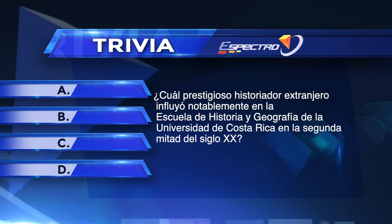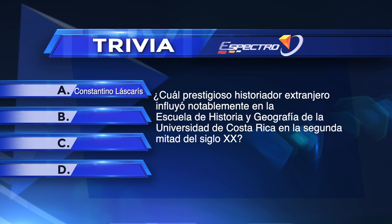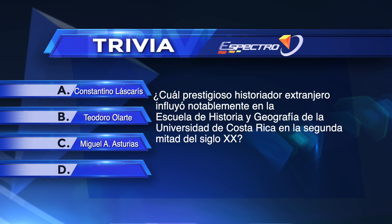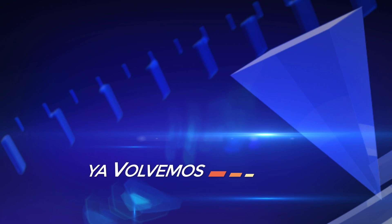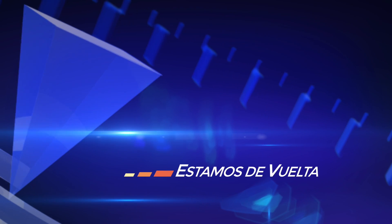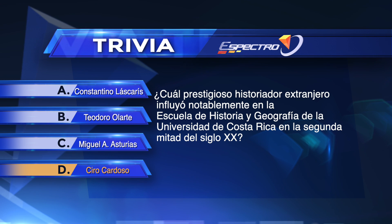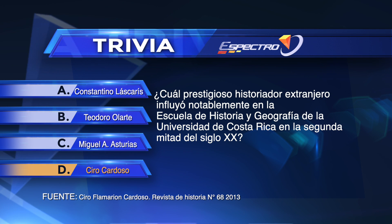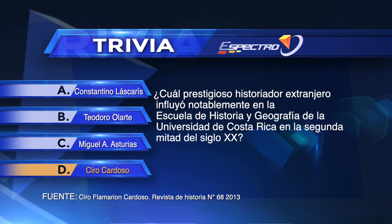¿Cuál prestigioso historiador extranjero influyó notablemente en la Escuela de Historia y Geografía de la Universidad de Costa Rica en la segunda mitad del siglo XX? Las opciones eran: A. Constantino Láscares, B. Teodoro Olarte, C. Miguel Ángel Asturias, D. Ciro Cardoso. La respuesta es D: la Universidad de Costa Rica tuvo como profesor al brasileño Ciro Cardoso, quien impactó la enseñanza de esa disciplina en la Escuela de Historia y Geografía. Llegó a Costa Rica en 1971 y durante los cinco años de su estadía desplegó una intensa actividad con conferencias, cursos y una amplia gama de publicaciones.